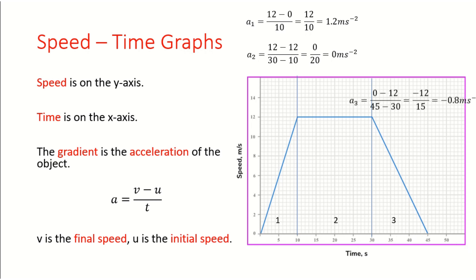Well, how do we get that? We notice that our final speed is 0. Our initial speed was 12. And the time we took, it took us 30 to 45. That's 15 seconds. So, when we put the numbers into our equation, we've got 0 take away 12 divided by 45 minus 30. So, minus 12 over 15. In other words, minus 0.8 meters per second squared.